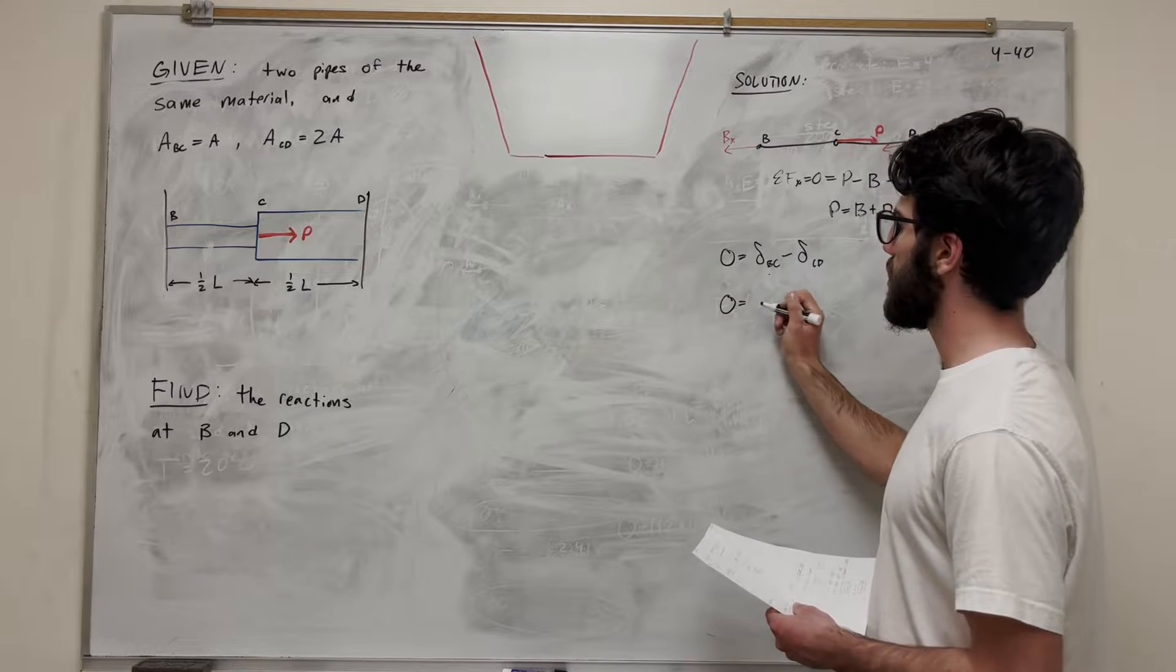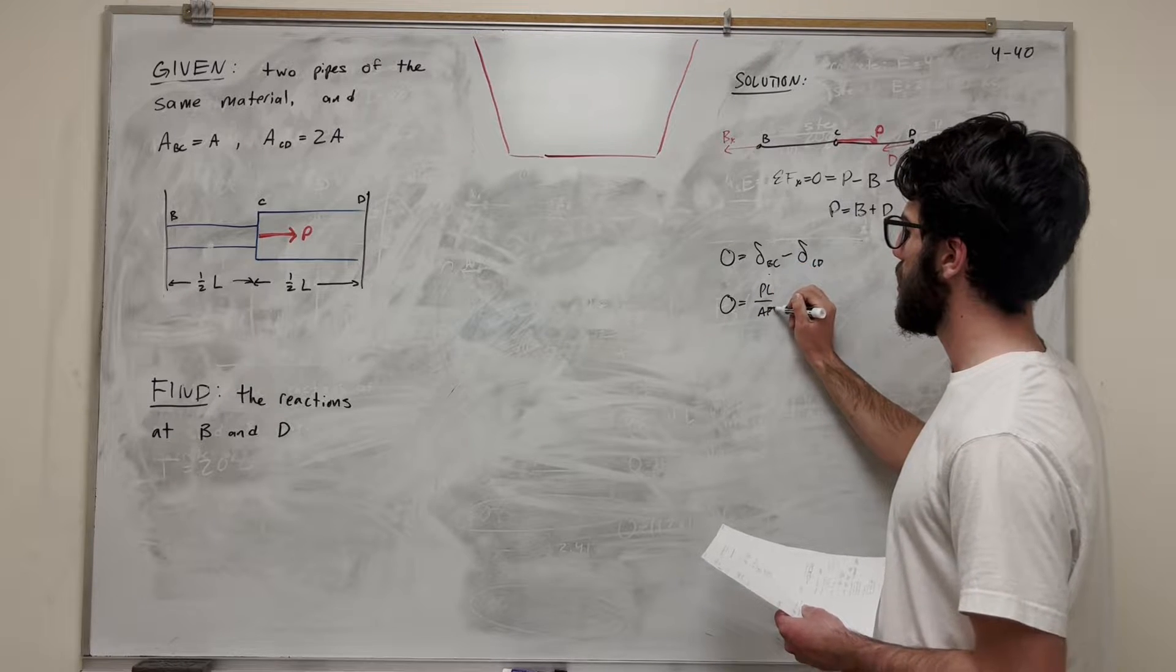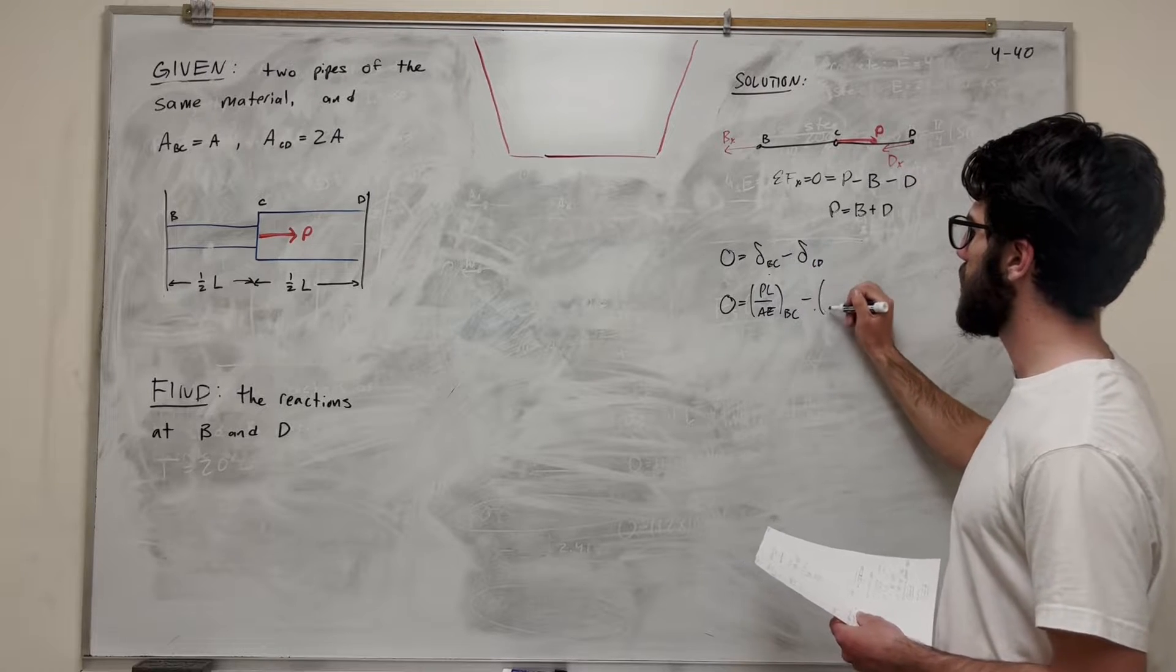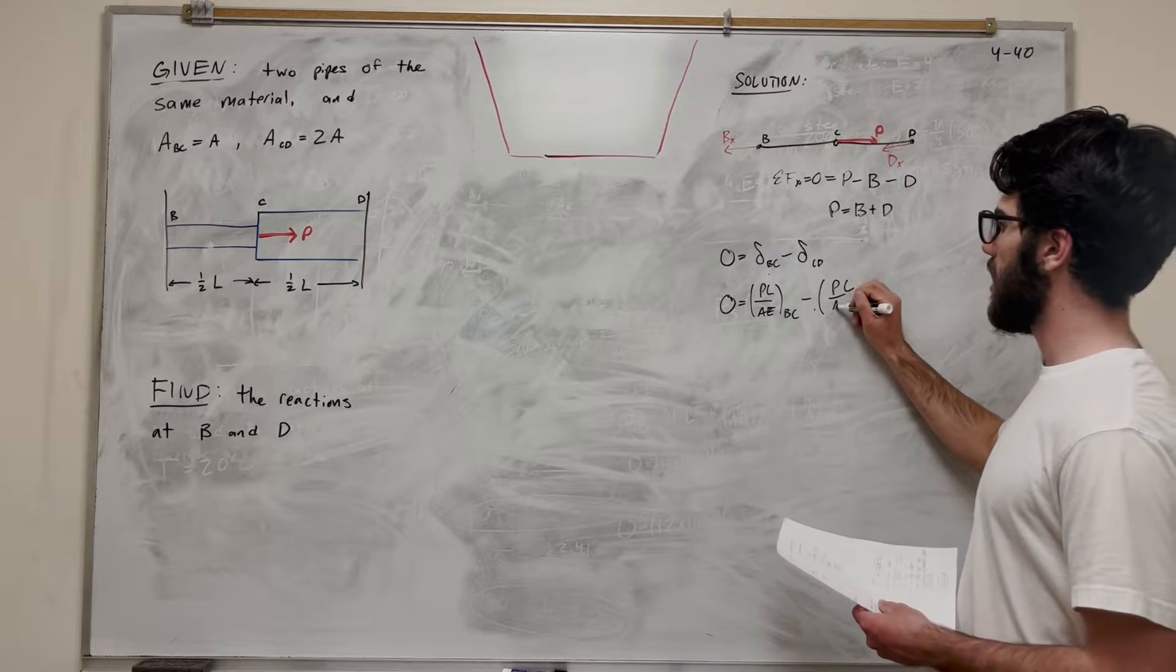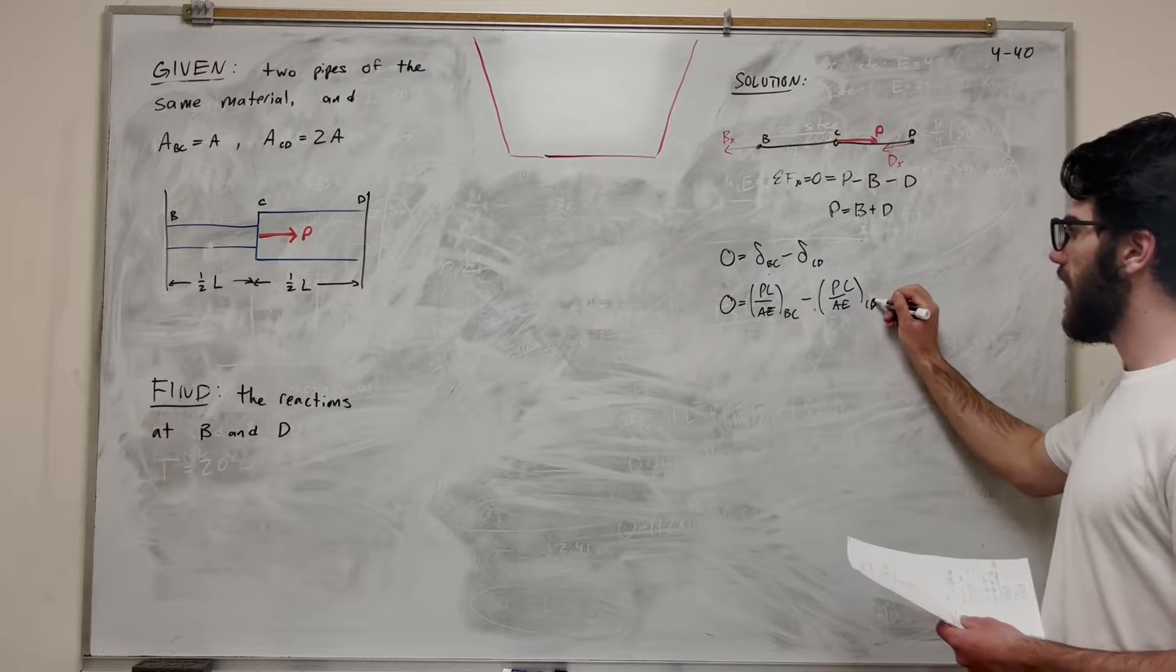So we know that delta is equal to PL over AE and so this is for BC minus PL over AE for CD. So now let's try to cancel out everything we know.